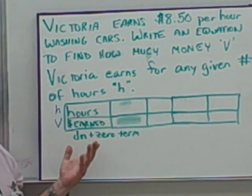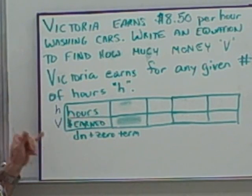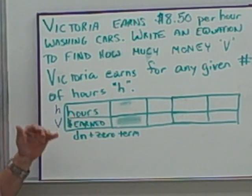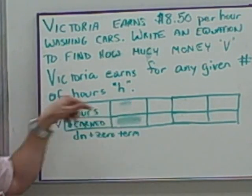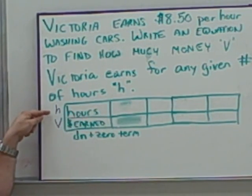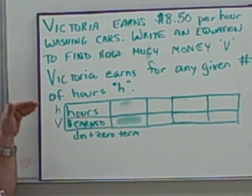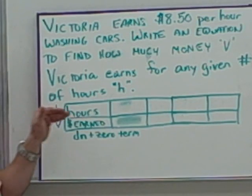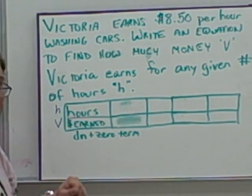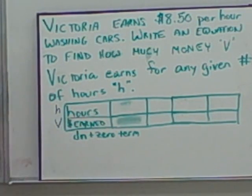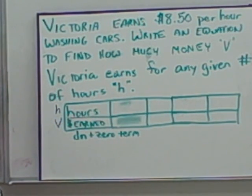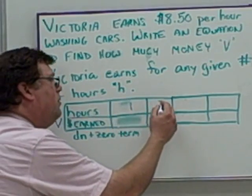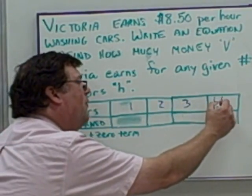How do I know which one's which? The one that you can control — you can choose the number of hours — that's going to be the first row. The first row is going to be the H values. The second row is the one that gets calculated based on the one you choose. You choose the hours, then calculate how much she earned based on those hours. So we're going to choose hours: one, two, three, and four.